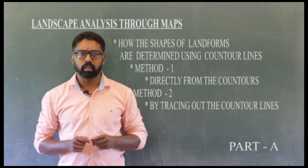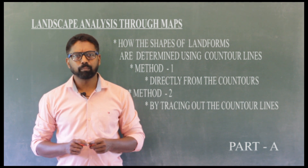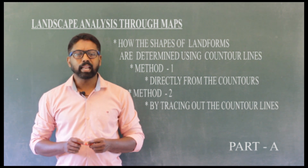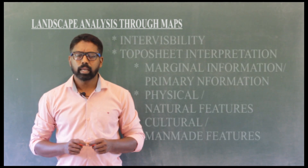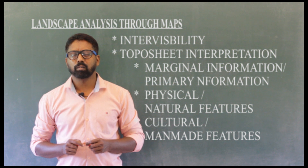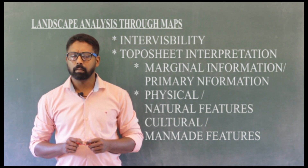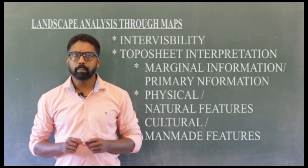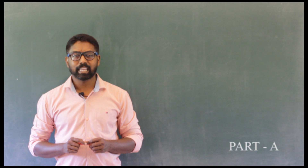Next, contour lines — how the shapes of landforms are determined using contour lines, and the method of assessing the topography directly from the contours. This chapter also covers toposheet interpretation: primary and module information, physical or natural features, and cultural or man-made features.